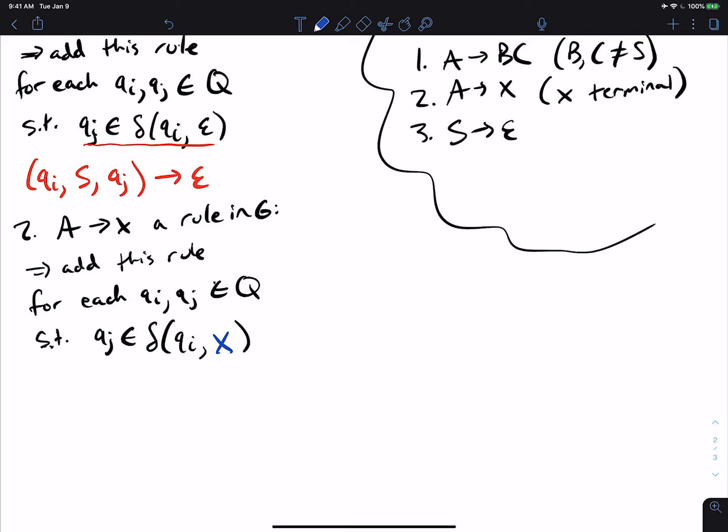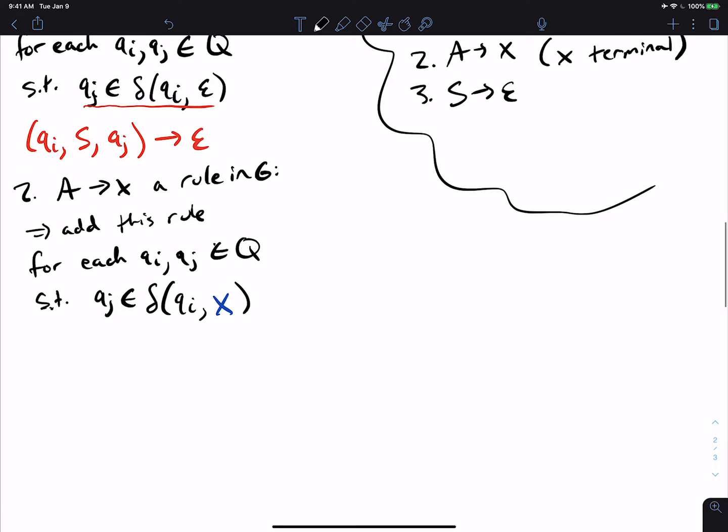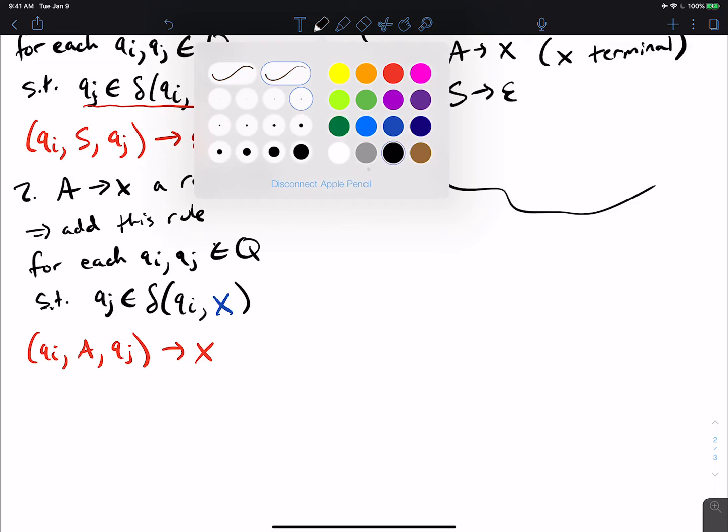So here, we got to be able to get to QJ from X, from reading in X from QI. And this is fine, because each transition of the NFA has one character, and because the grammar's in CNF, we only can have one character on the right side anyway. So this is fine here. So then we'll add the rule, QI A QJ goes to X. So the logic behind this is almost identical to the one we just did.